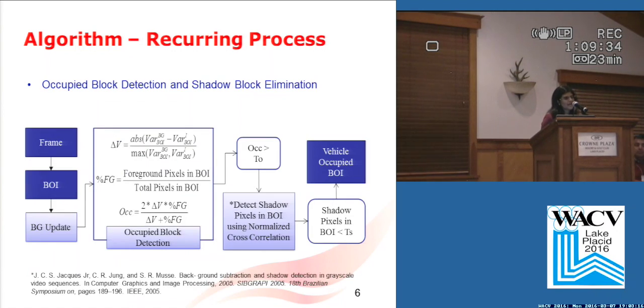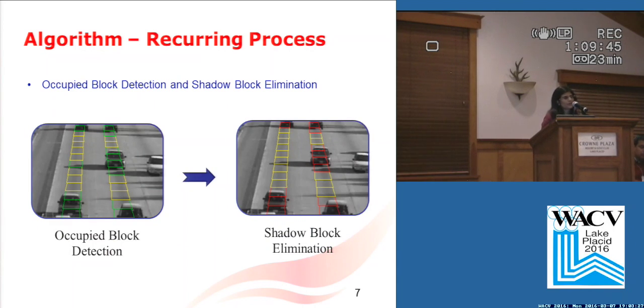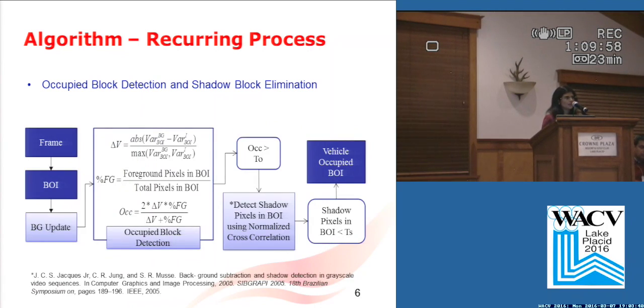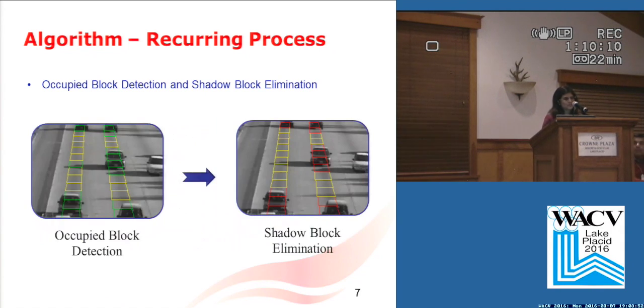After that, once we have constructed a background, we have blocks. We are trying to detect whether blocks are covered by vehicles. The first half of the algorithm works on an occupied block detection process in which we are trying to detect if there is any change with respect to the background. This is also a block based process. We take the variance difference with respect to the background and the foreground pixels together to get a parameter OCC which is used for the detection process. More details will be given in the poster presentation.